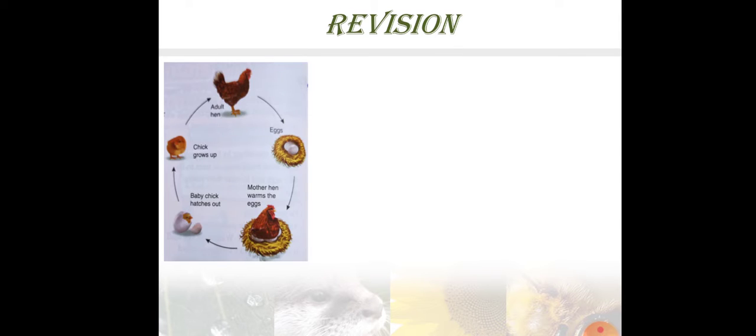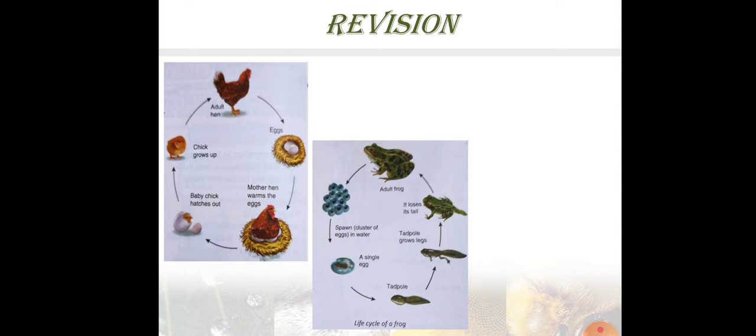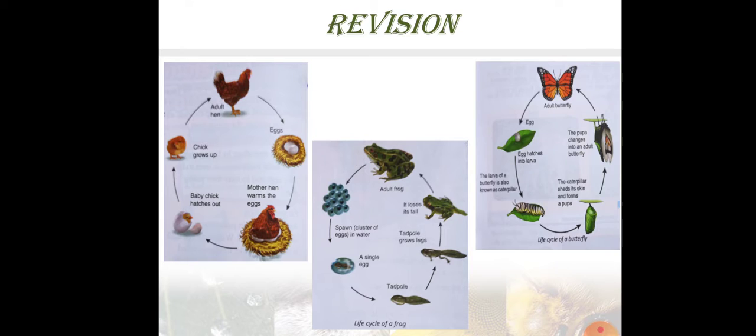Let's revise our previous topic. In that topic we had learned about the Life Cycle of a Hen, Life Cycle of a Frog, and Life Cycle of a Butterfly. A complete change from young form to an adult form is called metamorphosis. The process of shedding the old skin is called molting.